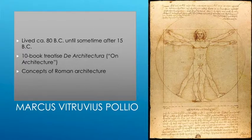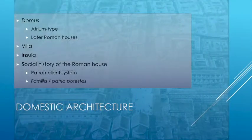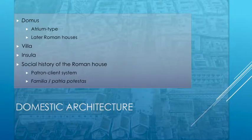Da Vinci made a careful study of Vitruvius's text himself. Let's start by talking about the first category: private architecture, domestic architecture. We can see a breakdown in terms of types of domestic buildings, really three categories. The first is the Domus — Domus in Latin meaning house. This is a townhouse, and many of these are of the so-called atrium type in the Republican and early imperial periods.